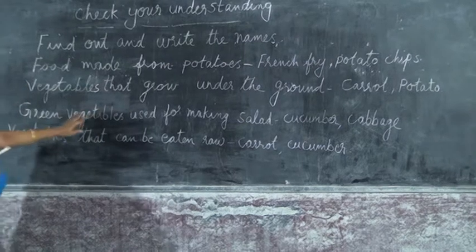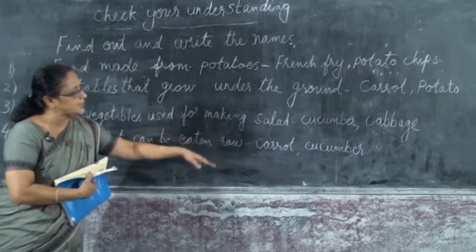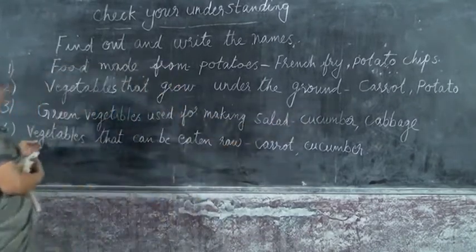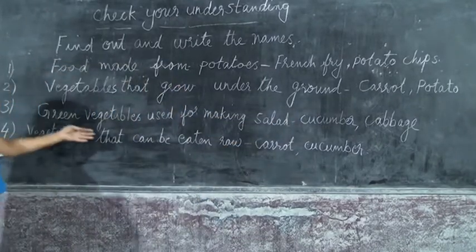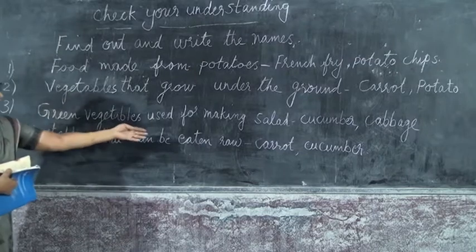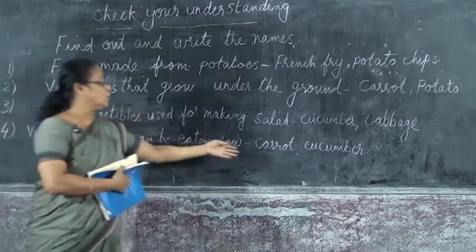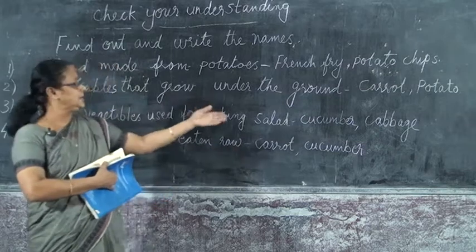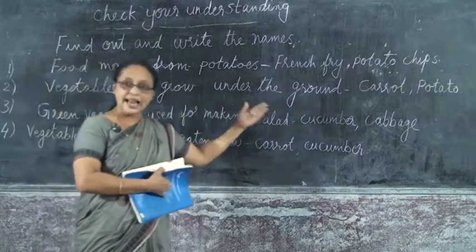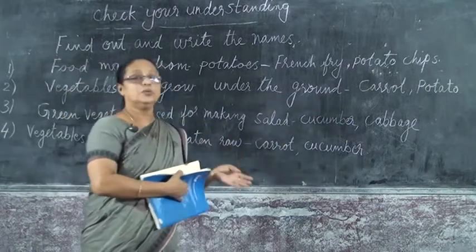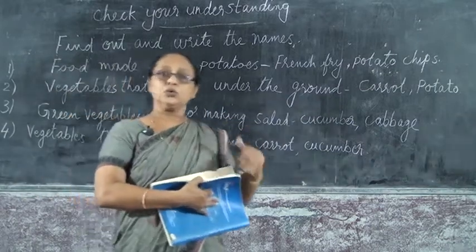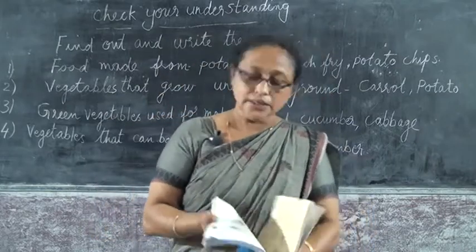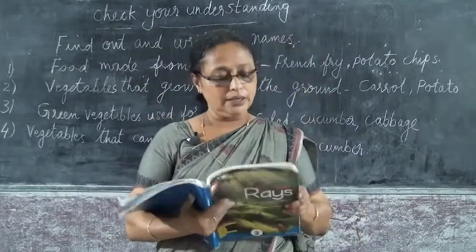Third one: green vegetables used for making salad — cucumber, cabbage. Next, fourth one: vegetables that can be eaten raw — that is carrot, cucumber. You can also write radish. What all things you can eat raw — you can eat any vegetable raw.